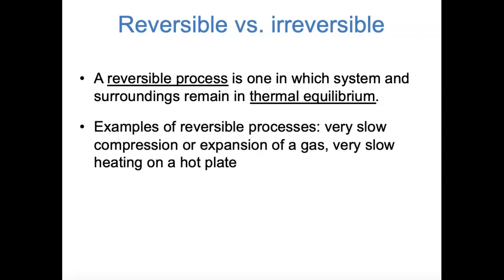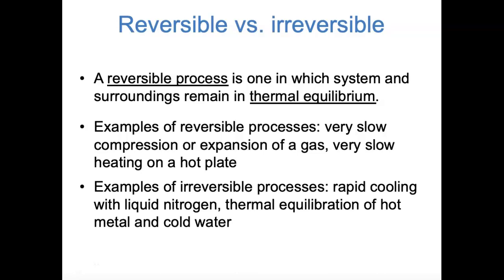Some examples of reversible processes would be the very slow compression or expansion of a gas, or the very slow heating of a system on a hot plate. Notice the key words: 'very slow.' The system has time to catch up to the surroundings—that's the requirement for a process to be reversible. Some examples of irreversible processes would be the rapid cooling of a system with liquid nitrogen, where temperature changes happen quickly, and also the thermal equilibration of a hot metal in cold water—when something hot and something cold are in thermal contact, that must be irreversible.